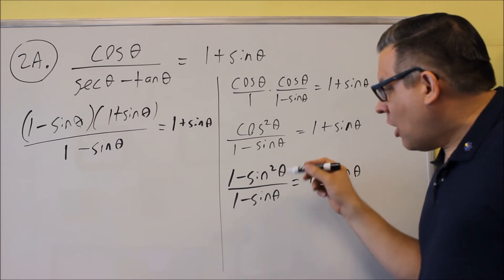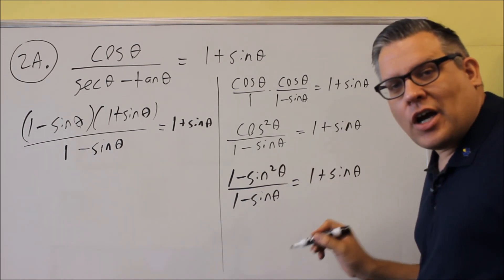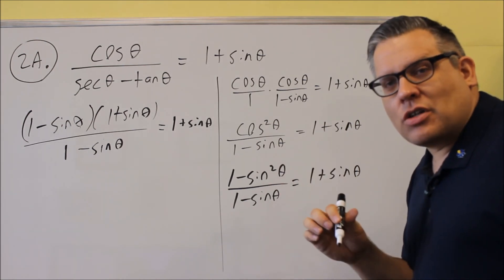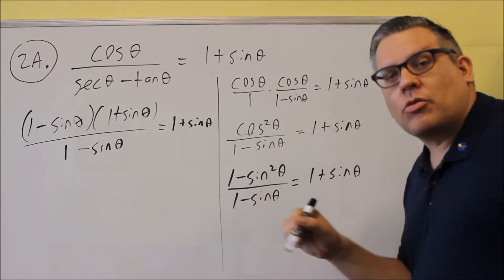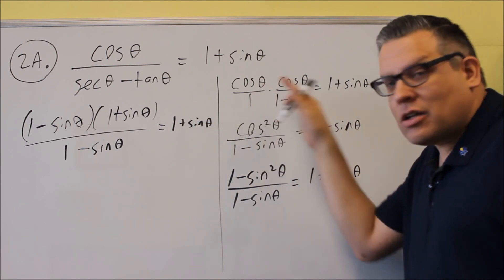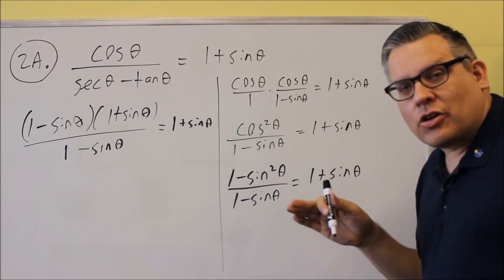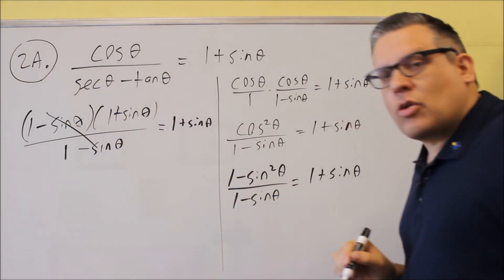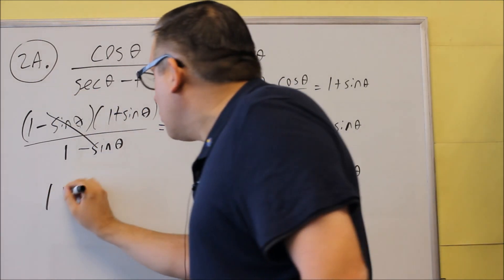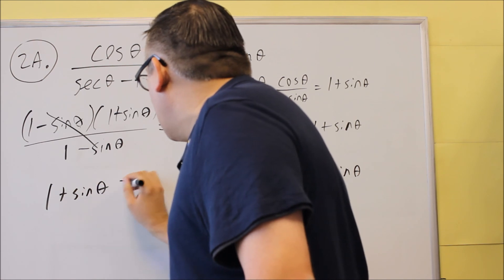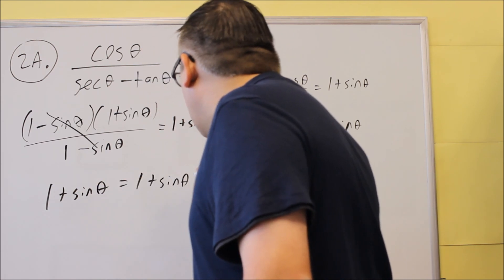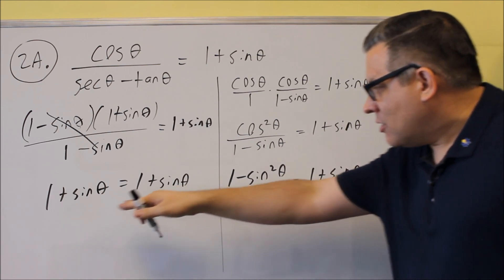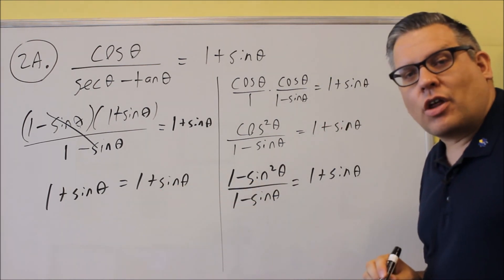Same idea when you turn this in to me, you want to show me that you understand how all this works and how you're getting from one side to the other because this whole thing is going to be the answer that you're doing. You're going to cancel out the one minus sine, and then we do get both sides equal, one plus sine theta equals one plus sine theta. So again, make sure you show all the steps here to where you get one side equal to the other side.